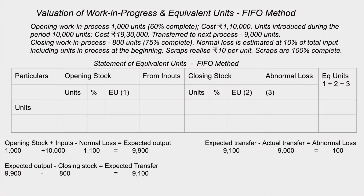Let's look at an example problem. Opening work in progress: 1,000 units, 60% complete. Cost already incurred on opening WIP: 1 lakh 10,000. Units introduced into this process: 10,000 units; total process cost: 19 lakhs 30,000. Units transferred to the next process: 9,000 units. Closing work in progress: 800 units, 75% complete. Normal loss: 10% of total input; scrap value: 10 rupees.